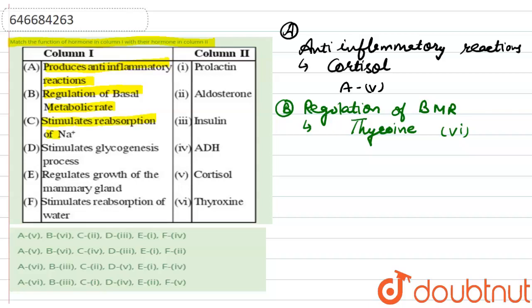Next: stimulate reabsorption of sodium ions. The hormone responsible for stimulation of sodium ion reabsorption is aldosterone, which is also produced by the adrenal gland.